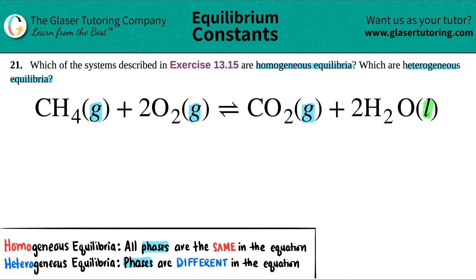Once you see that you have a different phase, that's a heterogeneous equilibrium, right? If this was a gas, and all of them are gases, then it would be homogeneous equilibrium. But for this one, since we have that liquid, this is heterogeneous.